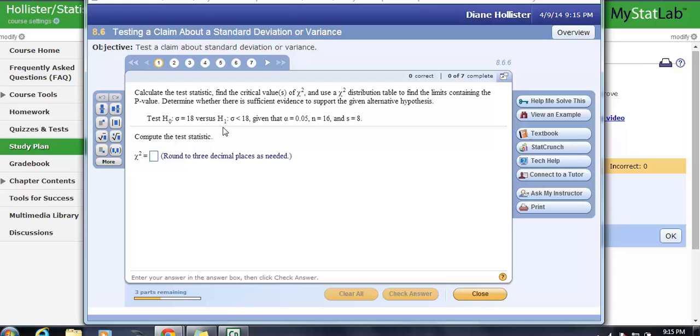To find the critical values of chi-squared, this is a one-tailed test. The claim here is that sigma is less than 18. So this is a one-tailed test, not a two-tailed. So we're only going to be looking at one end. The area is 0.05 and the sample size is 16.